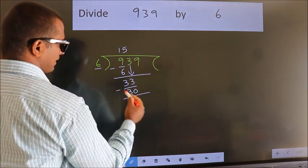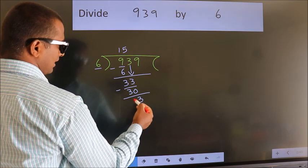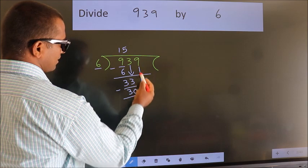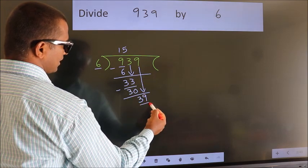Now we subtract. We get 3. After this, bring down the beside number. So 9 down, so 39.